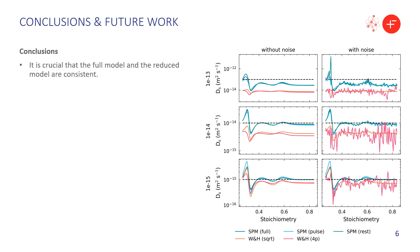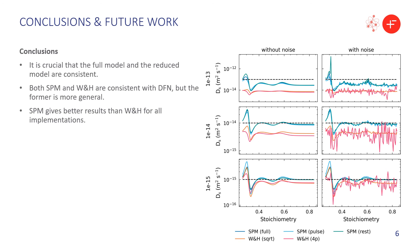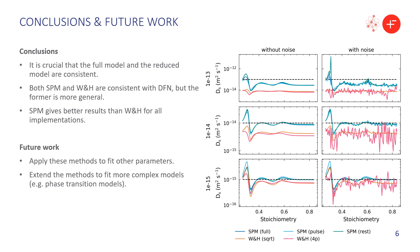To conclude: it's very important that the full model used in simulations and the reduced model used in fits are consistent. We took the DFN half-cell model and used asymptotic techniques to reduce it, finding both an SPM-type model and a Weppner and Huggins model. For the latter, extra assumptions are needed, so we suggest using the SPM model because it's more general — supported by comparisons with both synthetic and experimental data where SPM tends to give better results. For future work, we want to apply these methods to fit other parameters such as reaction rates, and extend to more complex models such as phase transition models and multiparticle models.